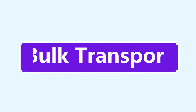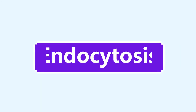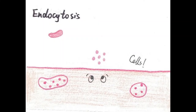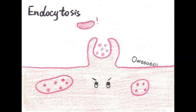Bulk transport is the transport of very large molecules in and out of the cell. The first part is endocytosis, which is a process by which a cell membrane envelopes a substance and draws it into the cell in a vesicle.